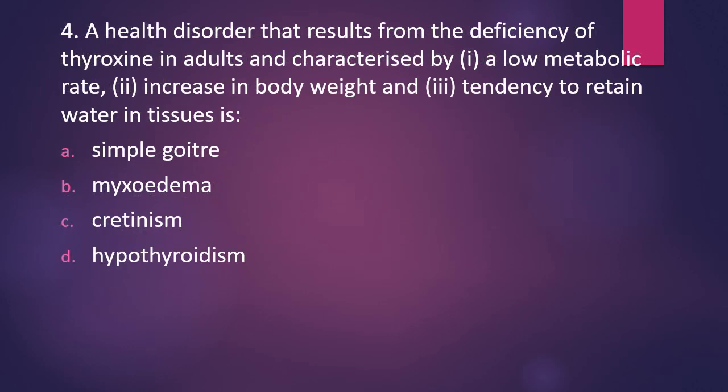Question number four: a health disorder that results from deficiency of thyroxine in adults, characterized by a low metabolic rate, increase in body weight, and tendency to retain water in tissues — is it simple goiter, myxedema, cretinism, or hypothyroidism? The correct answer is option B, myxedema.